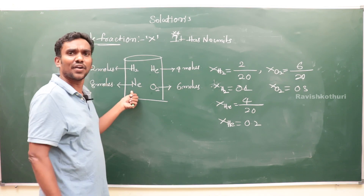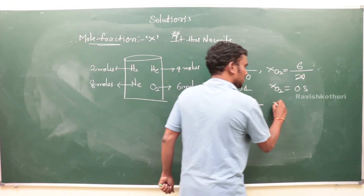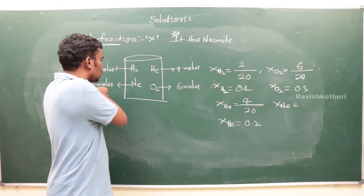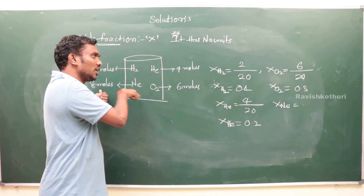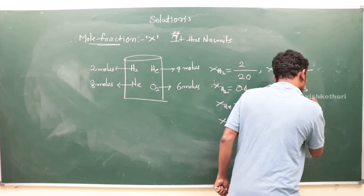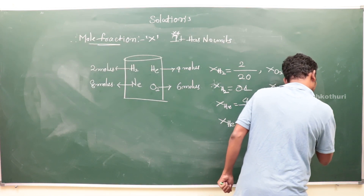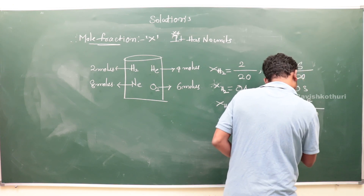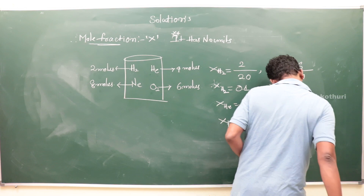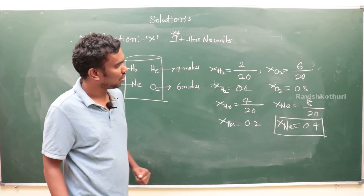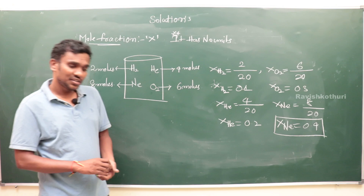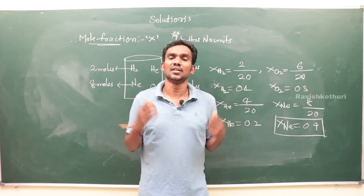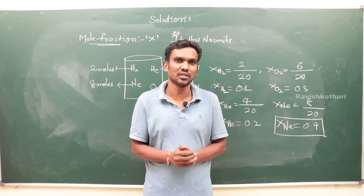Mole fraction of neon = number of moles of neon divided by total number of moles = 8/20 = 0.4. This completes the mole fraction example.